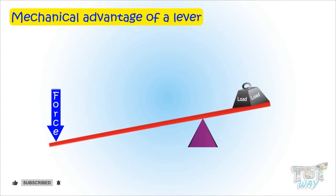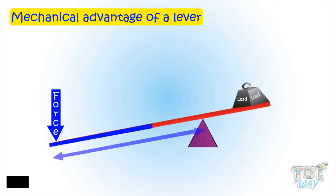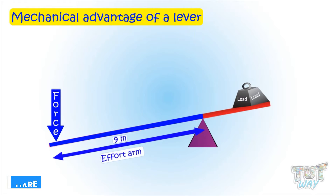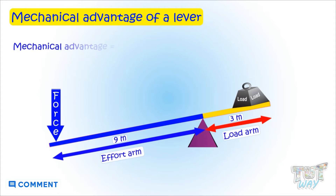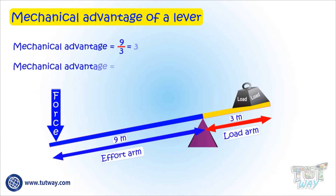Let's take another example. Here the length of the effort side is 9 meters and the length of the load side is 3 meters. So the mechanical advantage will be 9 divided by 3, which is 3.